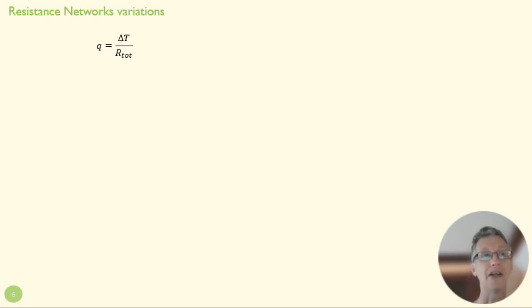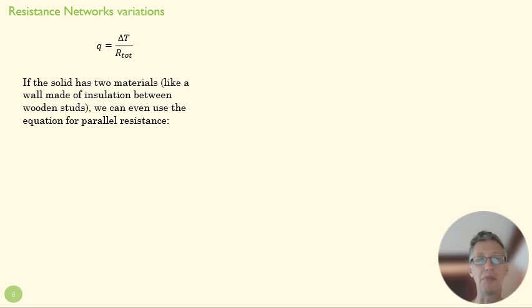So, let's expand the way that this is useful. Here's our basic equation where Q is going to be equal to the driving force divided by our resistance. We can apply that. We applied it to a series type network before. We can also apply it to a parallel type situation. If we want to say, imagine what the heat flow through a wall is that maybe has studs with insulation between the studs, that's like a parallel network. That heat flow can go in different ways through that wall, just like in a circuit.